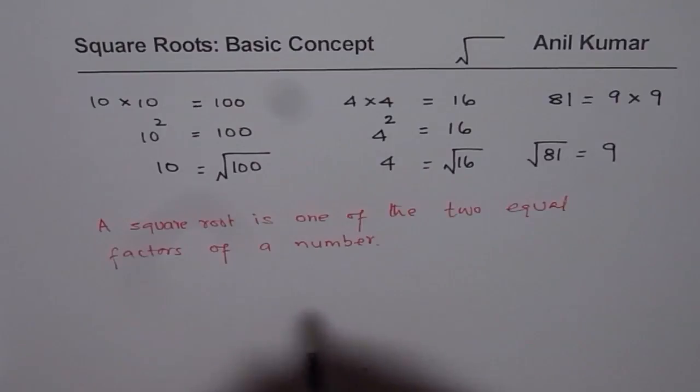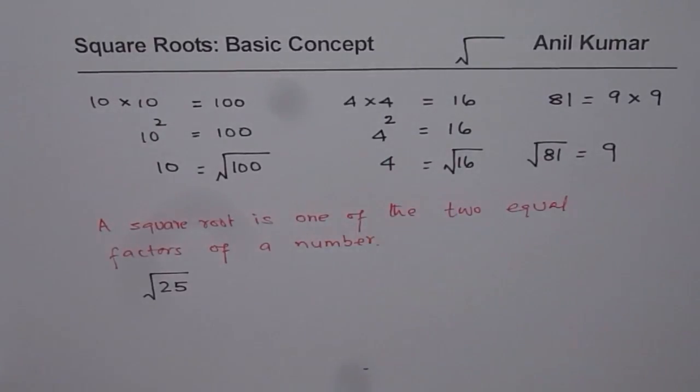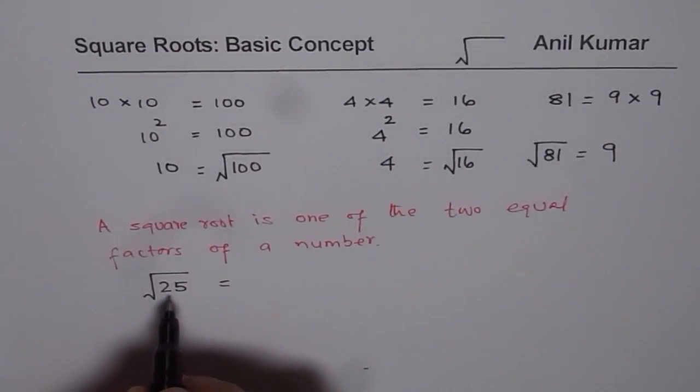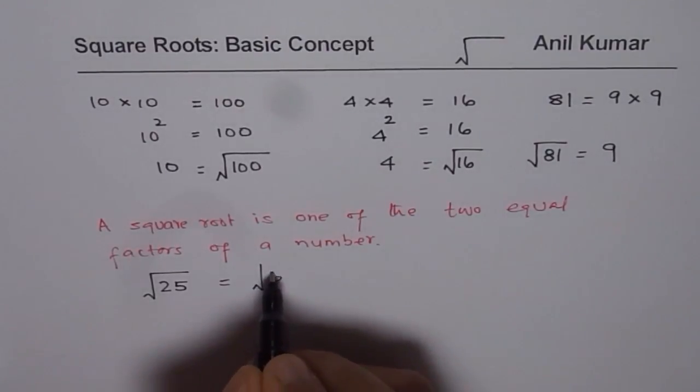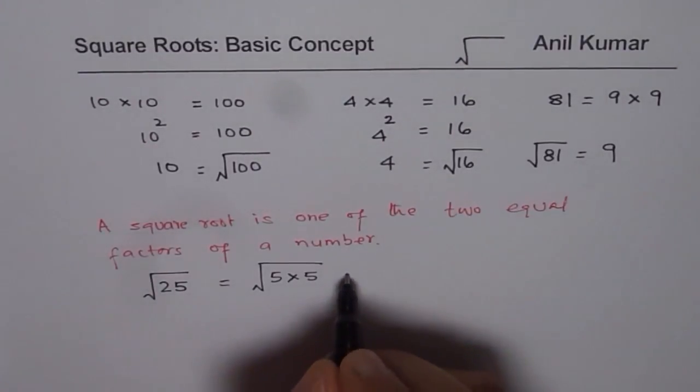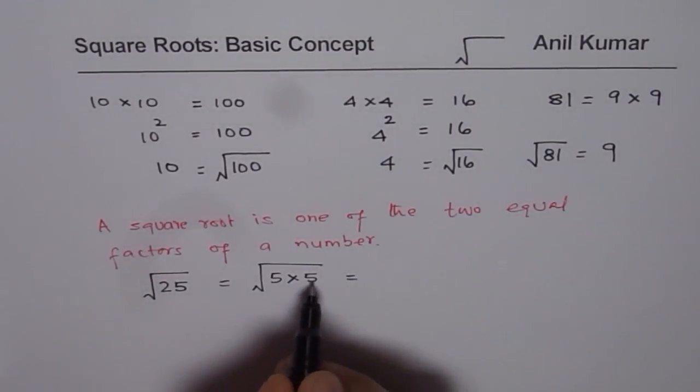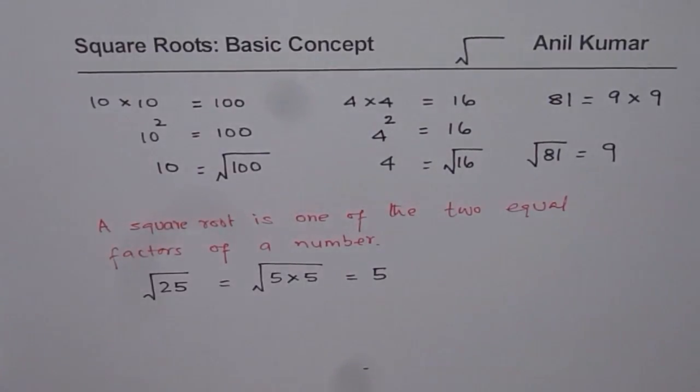Let me take some more. For example, now we have to find square root of 25. Now we know to find square root of 25, we need to find two factors of 25, which are exactly same. So you could say 25 is 5 times 5. So square root of 25 is one of these two equal factors. So it is number 5.